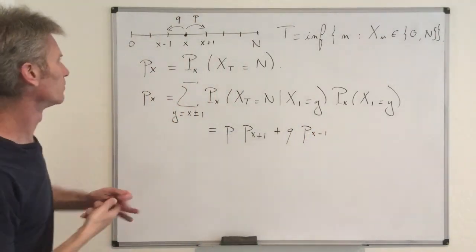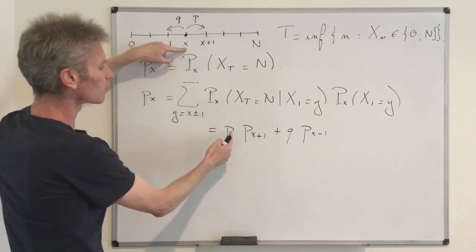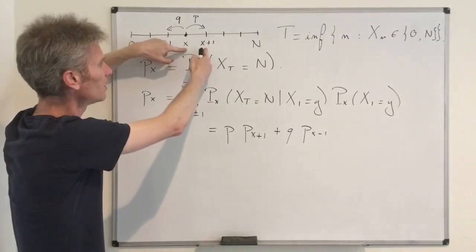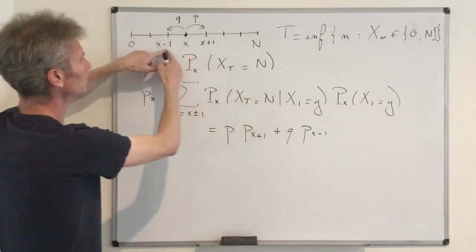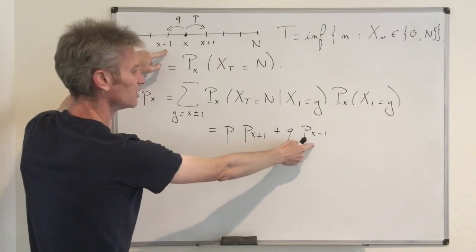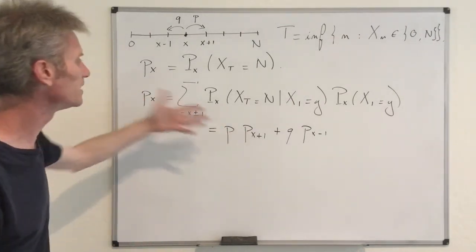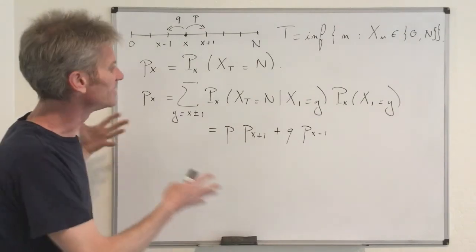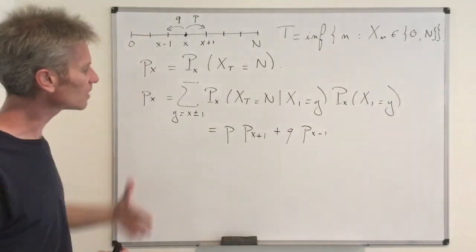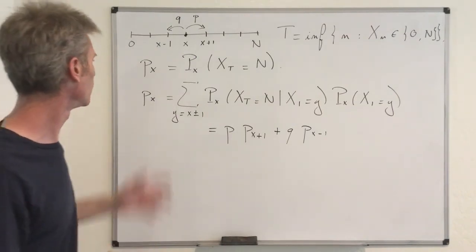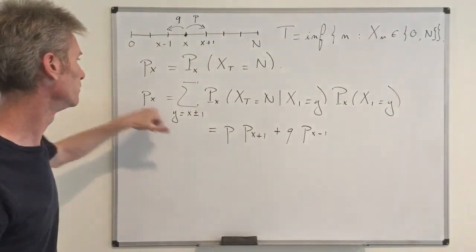We now have a system where P_X is related to P_{X+1} and P_{X-1}. It's a linear system involving three consecutive terms in the sequence P_X. The first trick is to observe that since P plus Q equals 1, we can write P_X as (P+Q) times P_X, which allows us to put terms in front of P and Q on the same side.